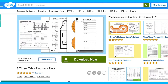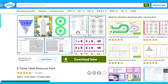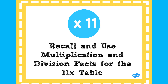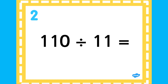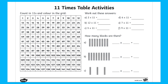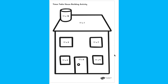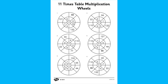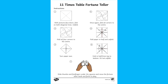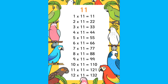Finally, you'll find resource packs for each individual times table on the Twinkl website. For example, in this 11 times table resource pack you'll find a facts PowerPoint, an activity sheet, a board game, a house-building activity, multiplication wheels which are great for times table practice, a fortune teller, and display resources like posters and bunting.